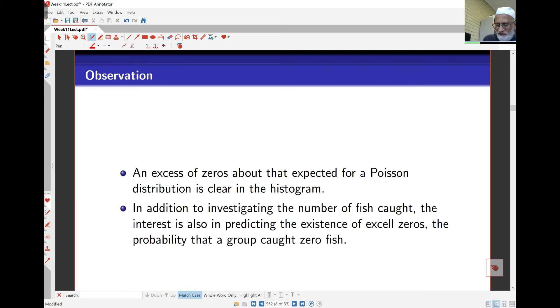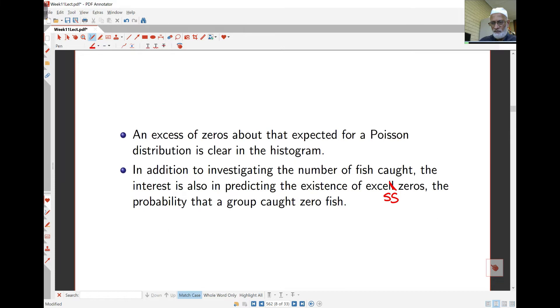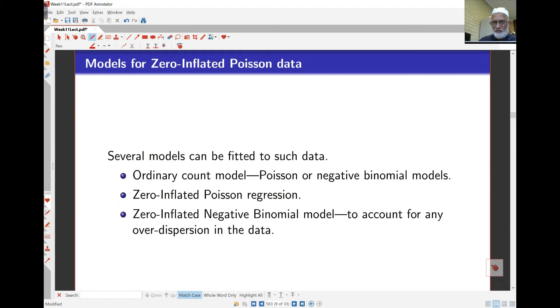In addition to investigating the number of fish caught, you also want to take a look at the behavior of the excess zeros and predicting who doesn't catch fish. So all the common models for the Poisson or negative binomial models and zero-inflated Poisson regression for the data. We can fit a zero-inflated model Poisson and zero-inflated negative binomial. Of course, we can also put in here the quasi-Poisson as well.